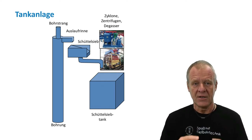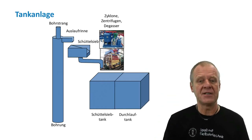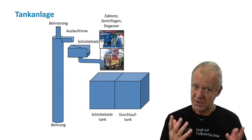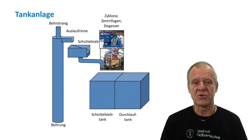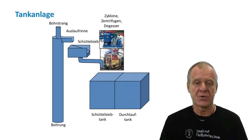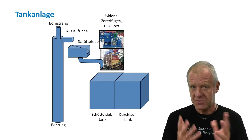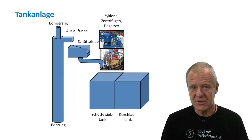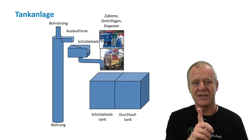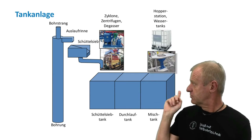When all these contaminants are taken out, the mud flows into the second pit. Here, the mud is checked again to ensure it is good enough to be used. Sometimes the mud engineer will find that some properties need to be adjusted or some ingredients need to be added. Therefore, the drilling mud moves to the mixing pit.